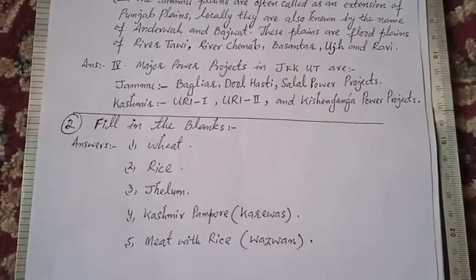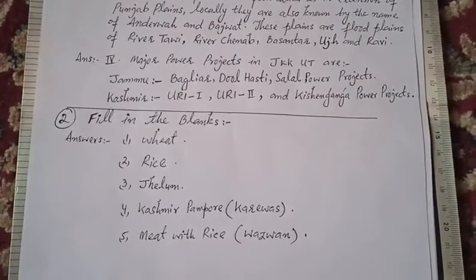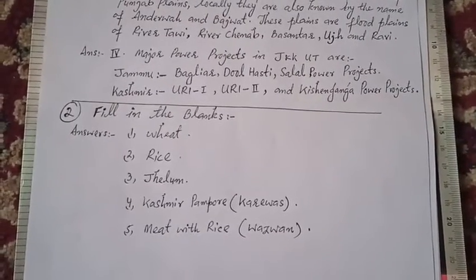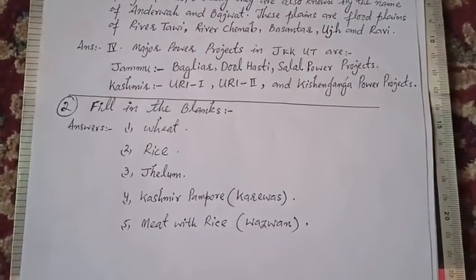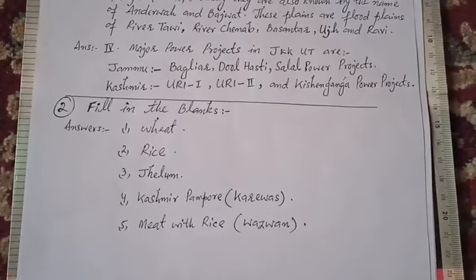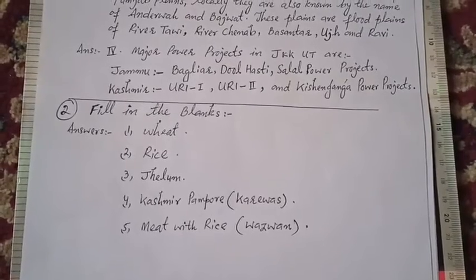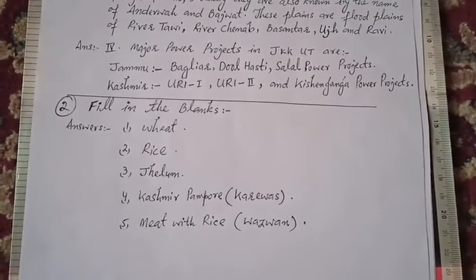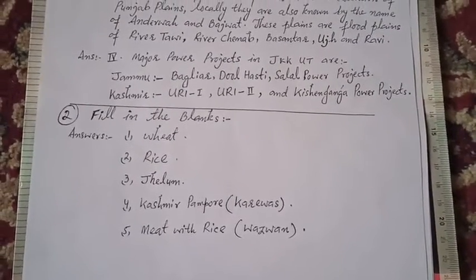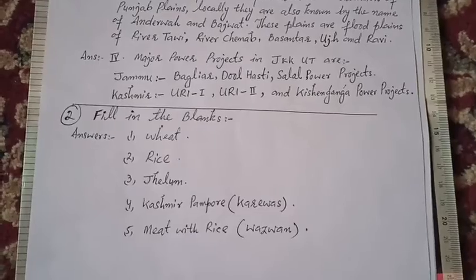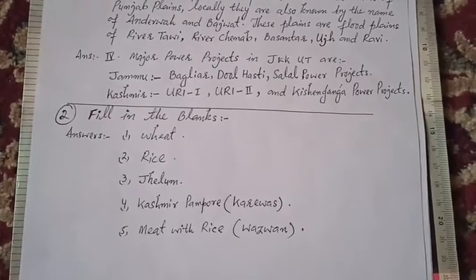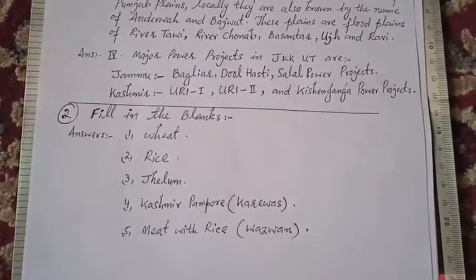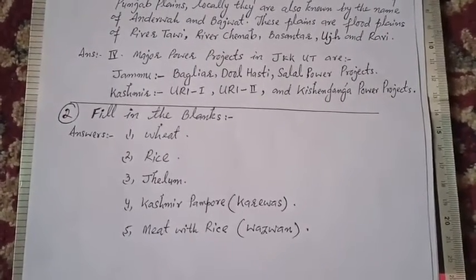Number four, saffron is mainly found in Kashmir's Pampore, which is called the curry vase. Number five, meat with rice, which is called Wazwan, is a cuisine of Kashmiri culture.